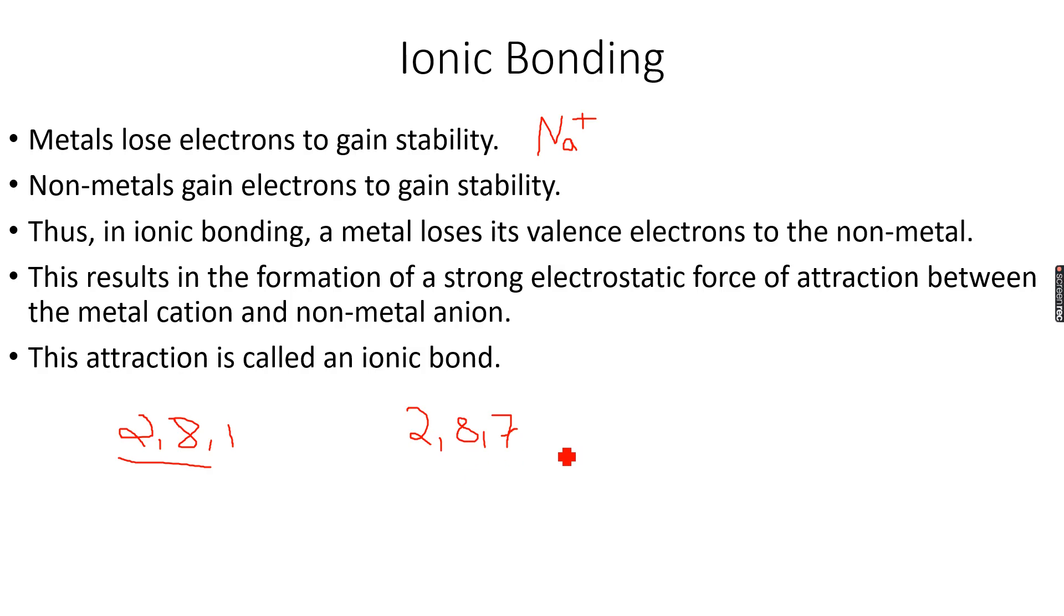Now obviously the more feasible option is to gain one electron to become stable. So it will gain one electron - when it gains one electron this becomes 2,8,8. Now it's stable, so this will form the Cl- ion.